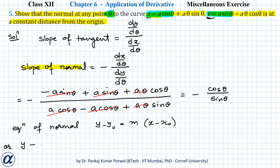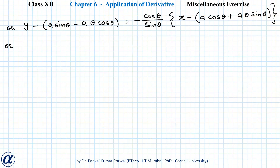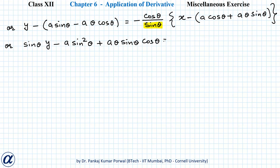That gives: y − (a sinθ − aθ cosθ) = (−cosθ/sinθ)(x − (a cosθ + aθ sinθ)). Cross-multiplying by sinθ: sinθ · y − a sinθ cosθ + a sin²θ... wait — sinθ · y − a cosθ sinθ + a sinθ cosθ = −cosθ · x + a cos²θ + aθ sinθ cosθ.